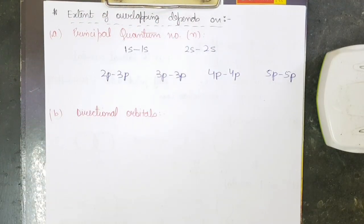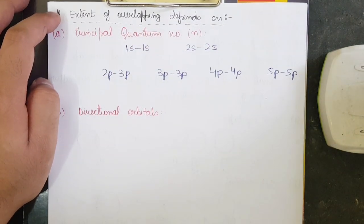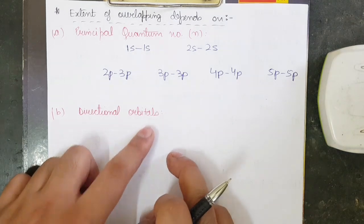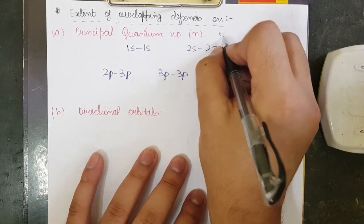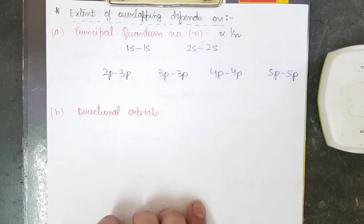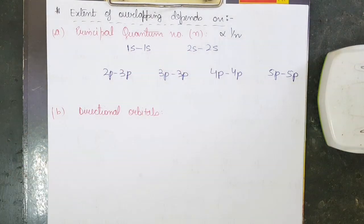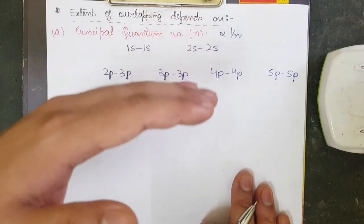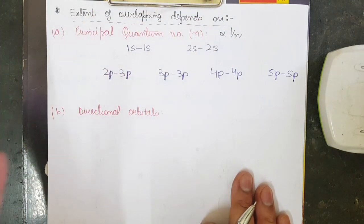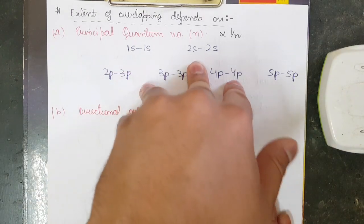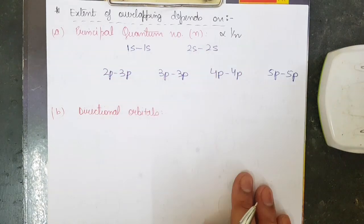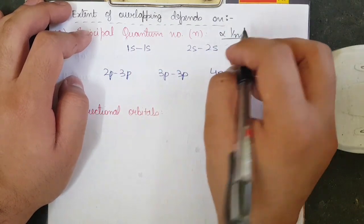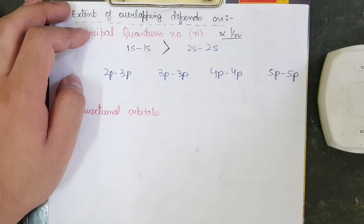Now we will understand extent of overlapping — meaning which overlap is stronger. It depends on two factors: one is principal quantum number, and the other is directional orbitals. The principal quantum number n is inversely proportional to the extent of overlap. So 1s–1s overlap will be greater than 2s–2s overlap.